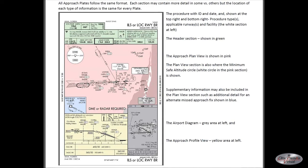One key thing you'll find very helpful is the minimum safe altitude circle. Here it happens to be divided exactly into north and south halves. Minimum safe arriving from the south is 2,900 feet, flying over the tall buildings. Arriving from the north, only 2,100 feet, since Space Mountain is a long way away.